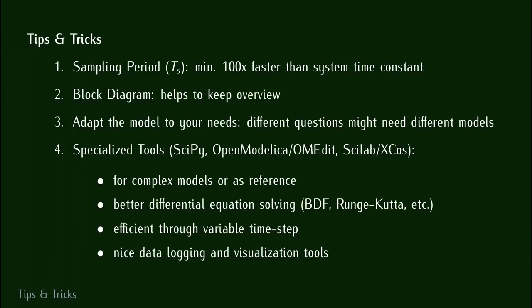This brings me already to the end of the talk. Just some tips and tricks to summarize. As I said, the sampling period needs to be small. As a rough estimate, I usually take around 100 times faster than the system time constant. So for a mechanical system, usually one millisecond is okay. If you have the electric motor with the coil, then you need to reduce the sampling period maybe to 10 microseconds or even less. It depends on the system time constant.